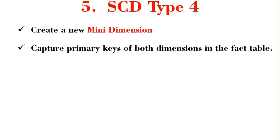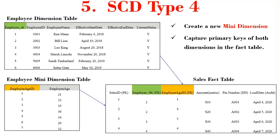Type 4 is used when a group of attributes or an attribute in a dimension rapidly changes. If one particular attribute changes more frequently, we need to split that attribute out of the main dimension table and create a mini dimension for it. For example, if employee age keeps changing rapidly, we take it out of the employee dimension, create a new dimension with its own key, and represent both primary keys in the fact table.